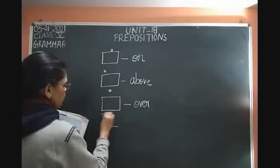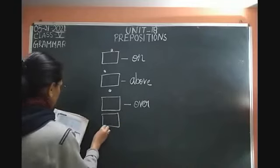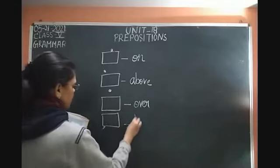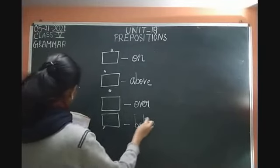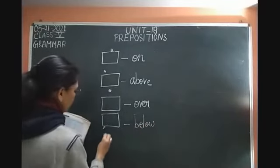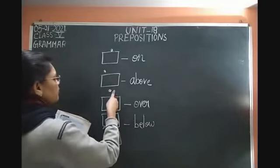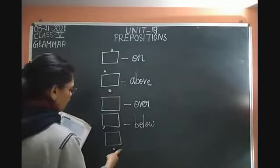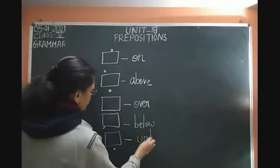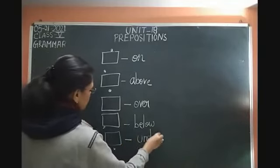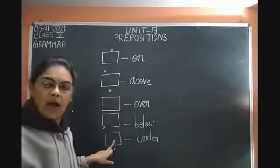And 'below' — agar koi cheez thoda neeche hai uske liye 'below' use karte hain. Lekin agar koi cheez ekdam vertically neeche hai — so that is the opposite of over — uske liye 'under' use karte hain. So vertically neeche ke liye 'under.'